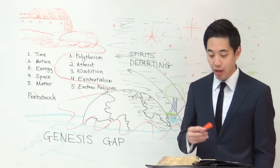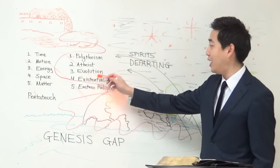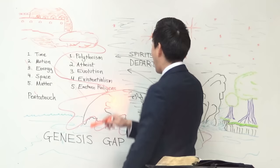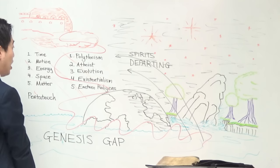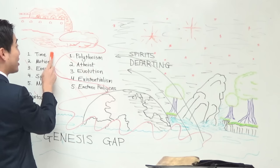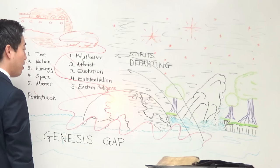Verse 4: "And God saw the light, that it was good: and God divided the light from the darkness." God saw the light — it's good — but He divides this light from the darkness. Notice that this is before the sun and before the moon, so there is light that exists before the sun. God literally divided the light from the darkness.